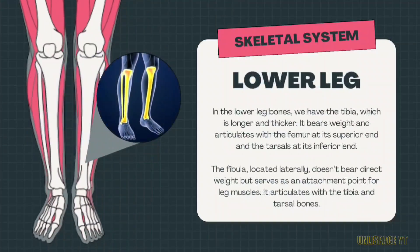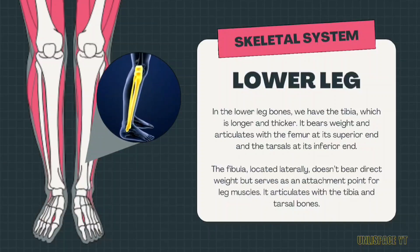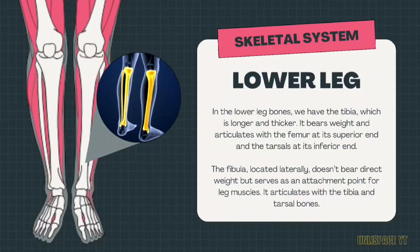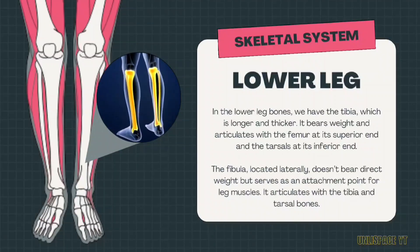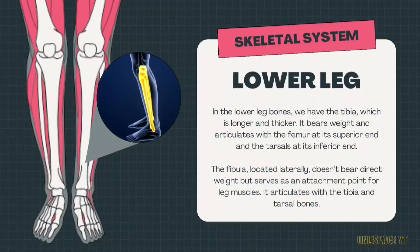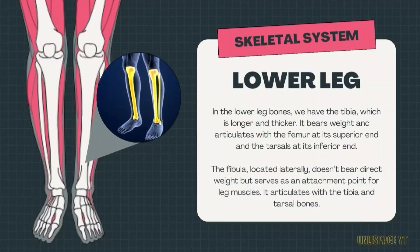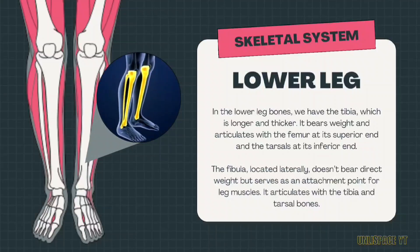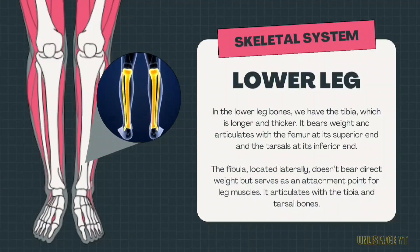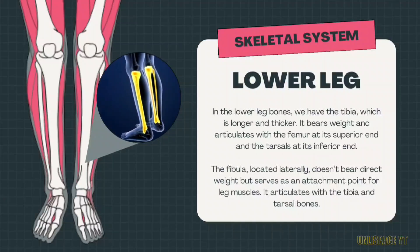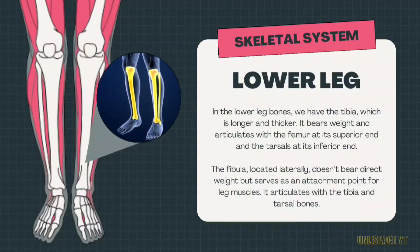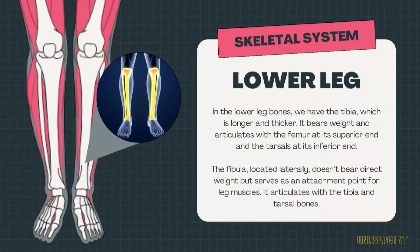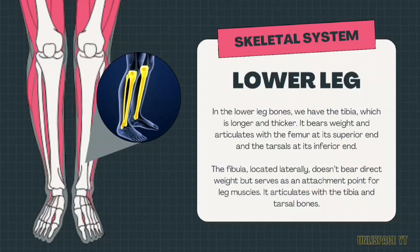In the lower leg bones, we have the tibia, which is longer and thicker. It bears weight and articulates with the femur at its superior end and the tarsals at its inferior end. The fibula, located laterally, doesn't bear direct weight but serves as an attachment point for leg muscles. It articulates with the tibia and tarsal bones.